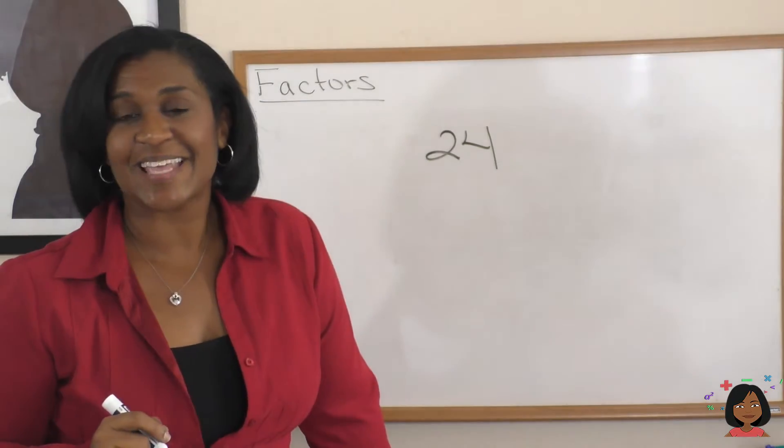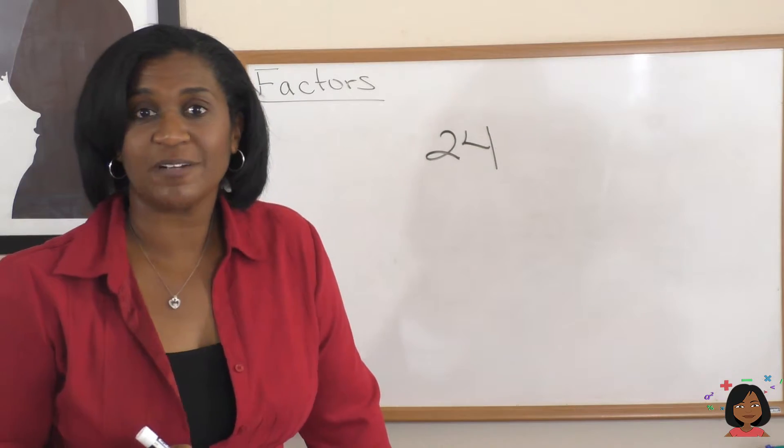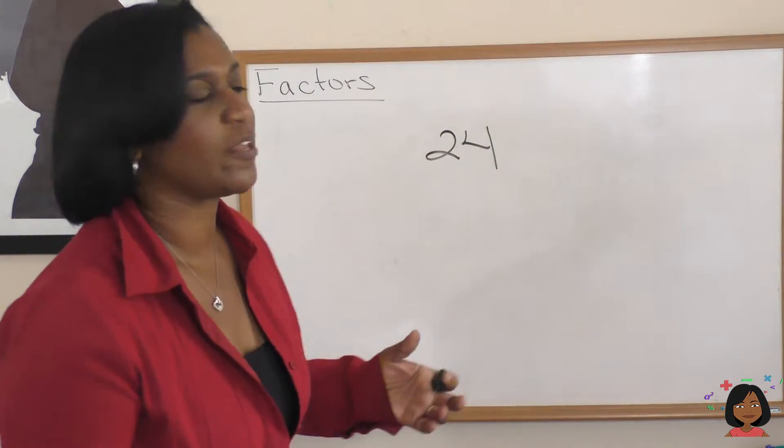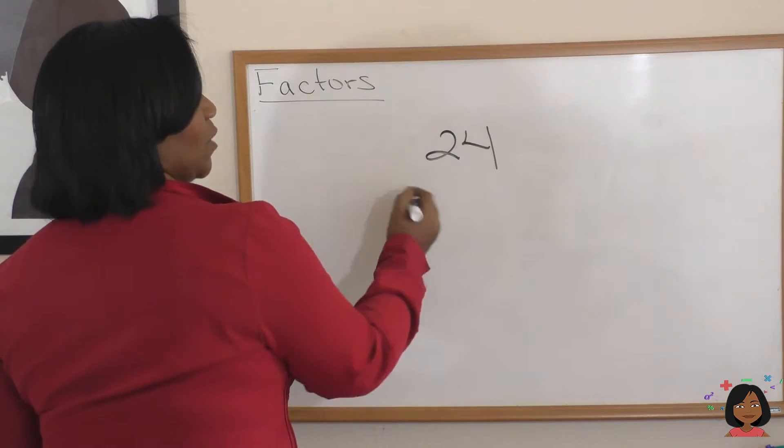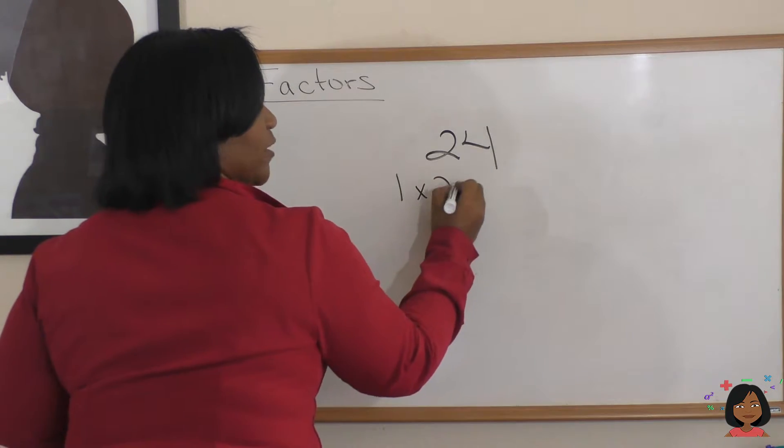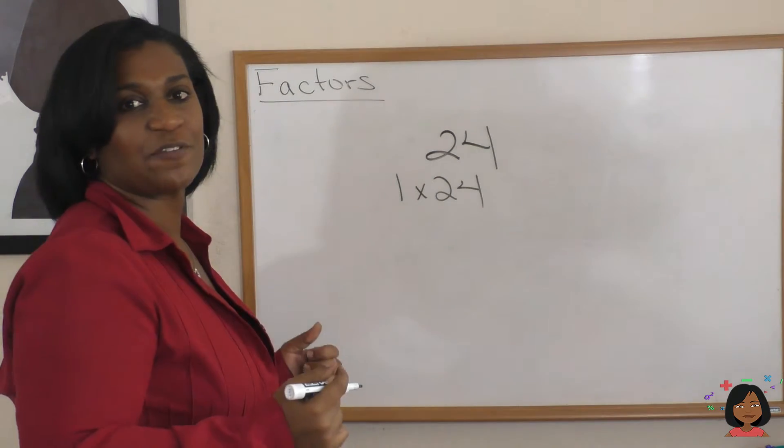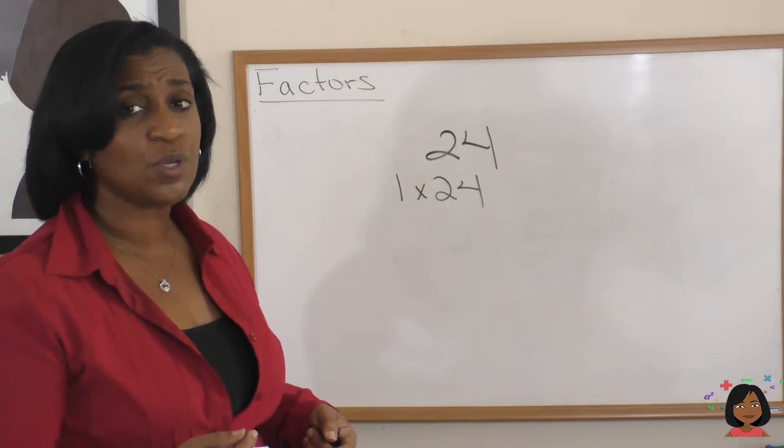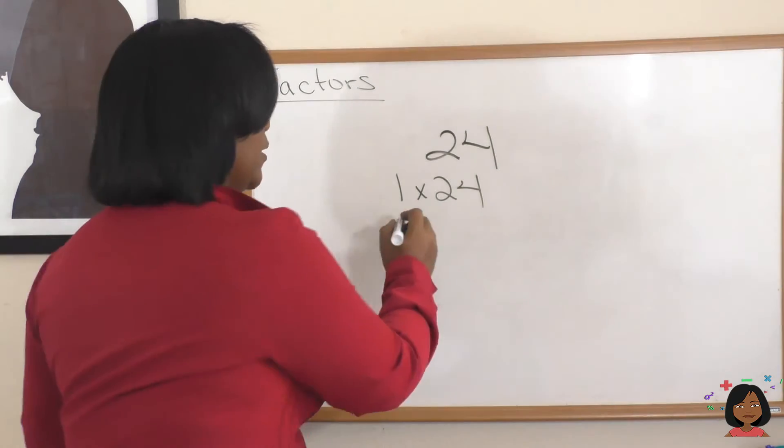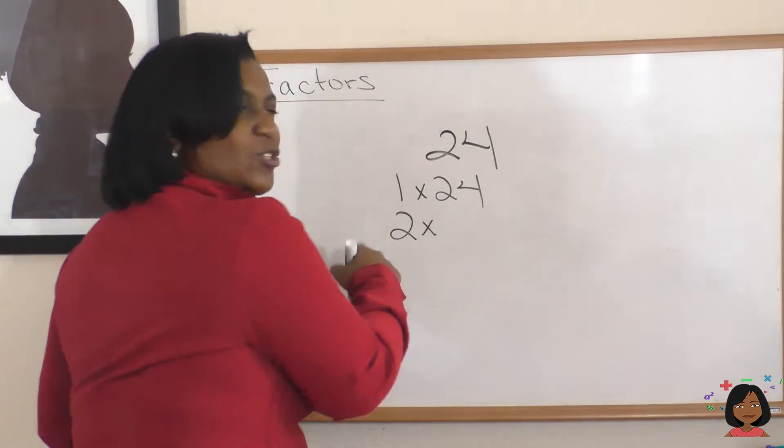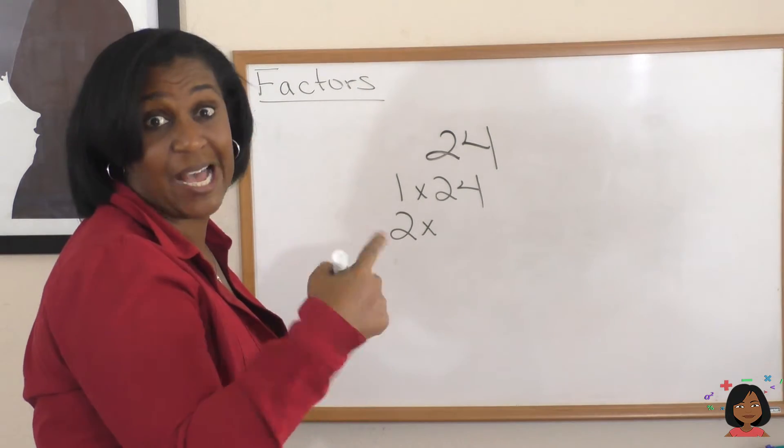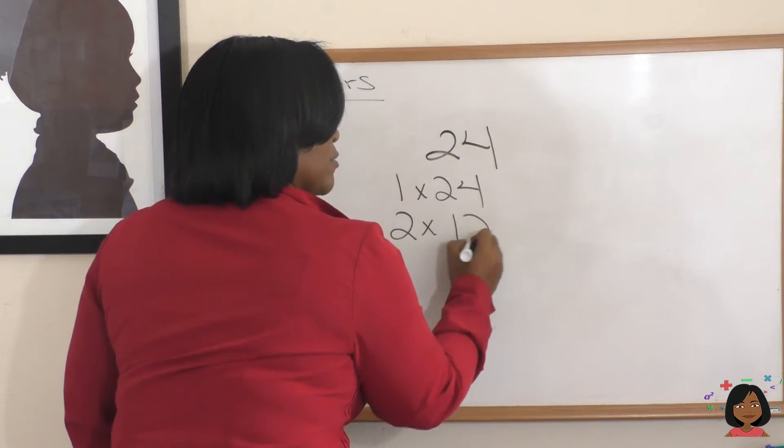Let's give you one last example. Let's use the number 24. So what are the factors of 24? Let's think about it. Well, always start with 1. 1 times 24 gives us 24. What about 2? Does 2 go into 24? Yes, it does. 2 times what is 24? Ah, 2 times 12. So those are also factors.